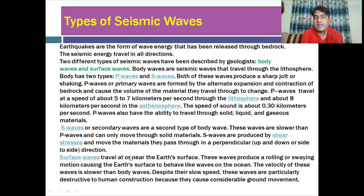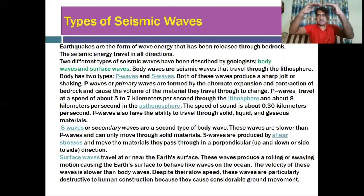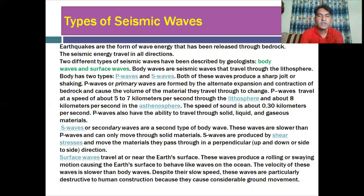Surface waves travel at or near the surface of the Earth — either at the surface or subsurface. These waves produce a rolling or swelling motion, causing the Earth's surface to behave like waves on the ocean.